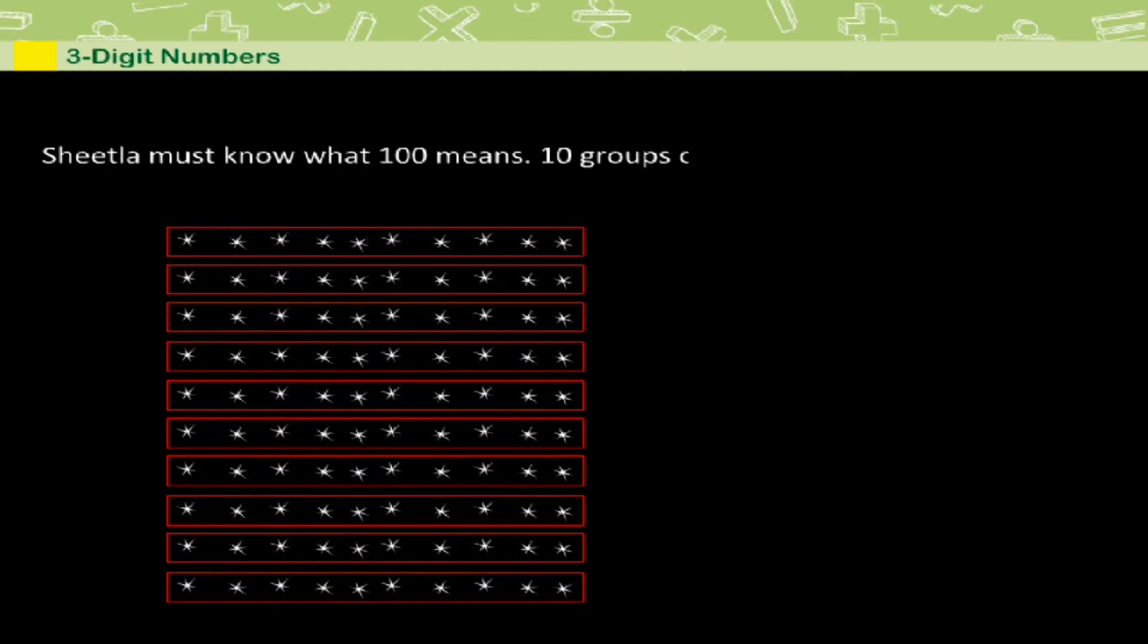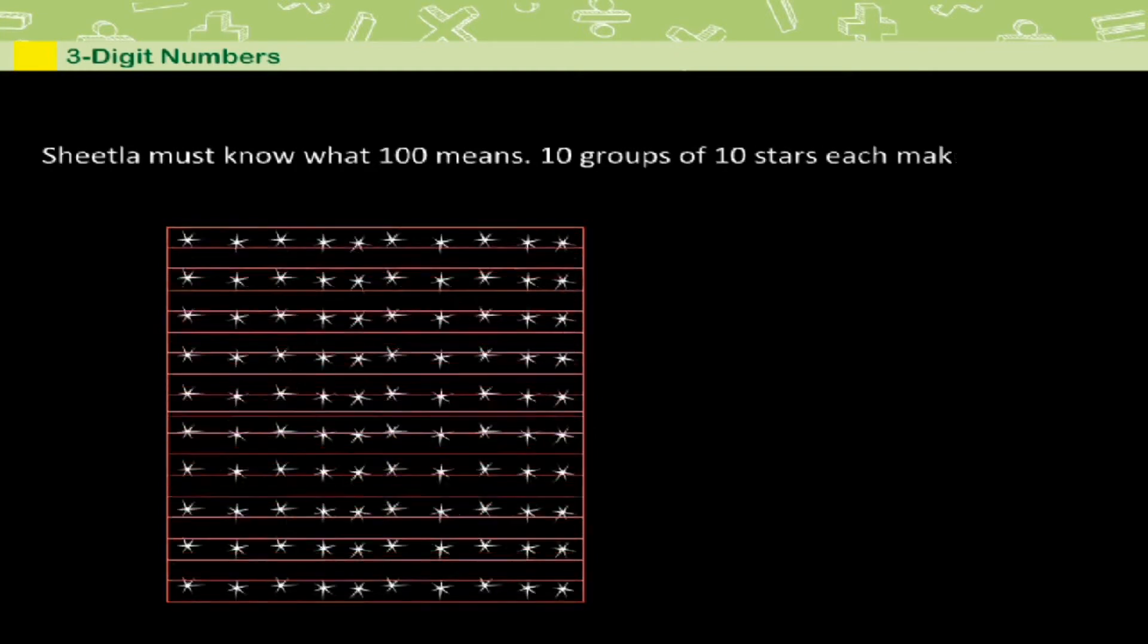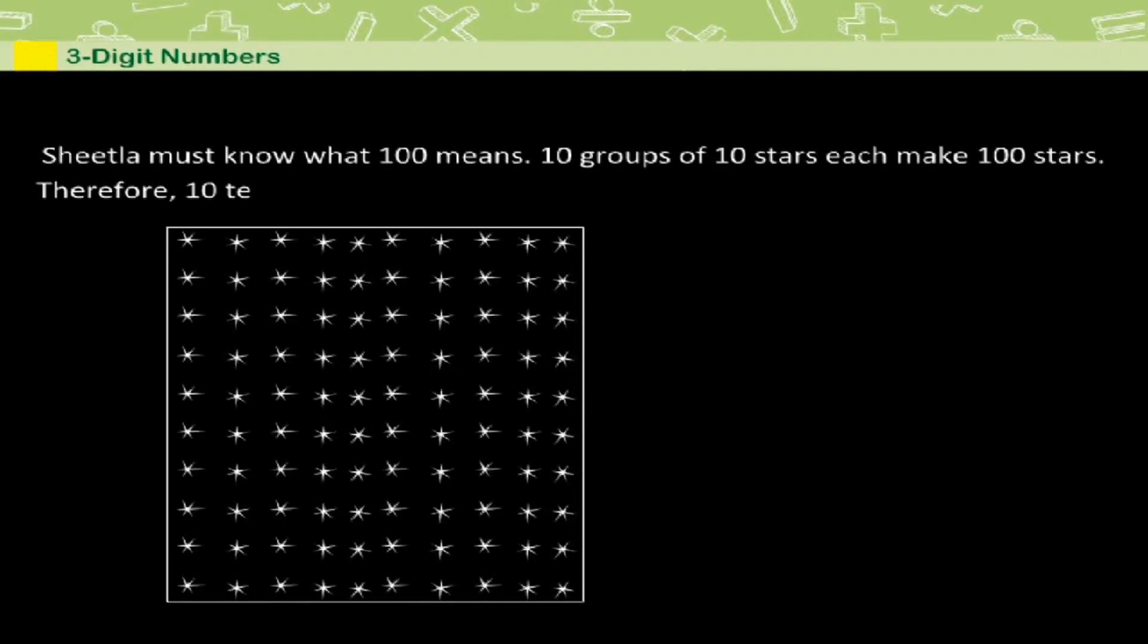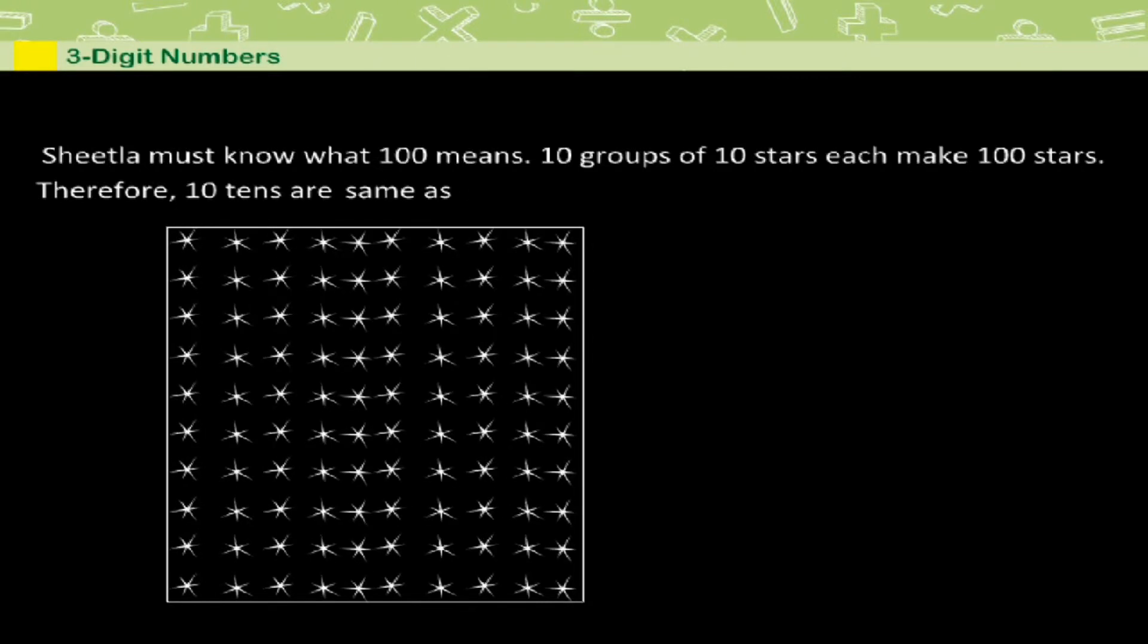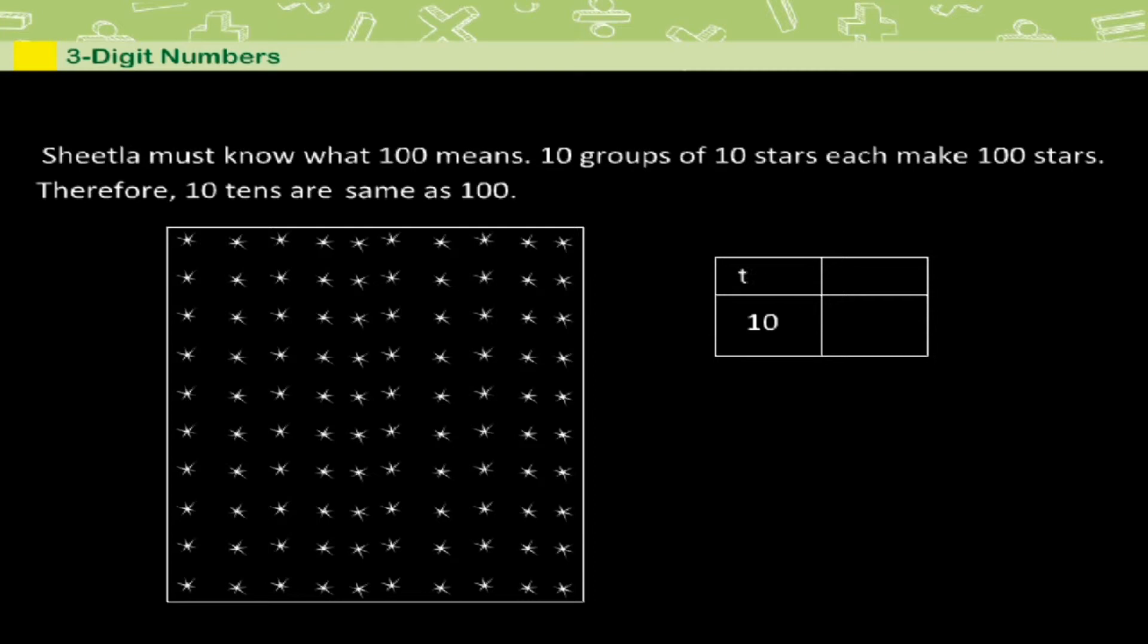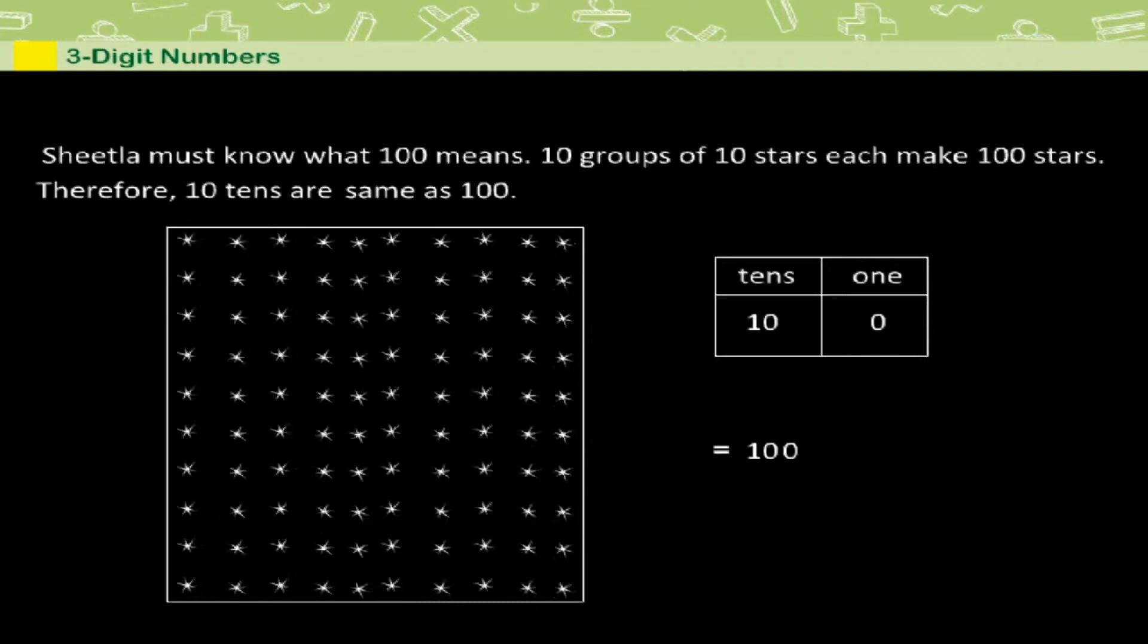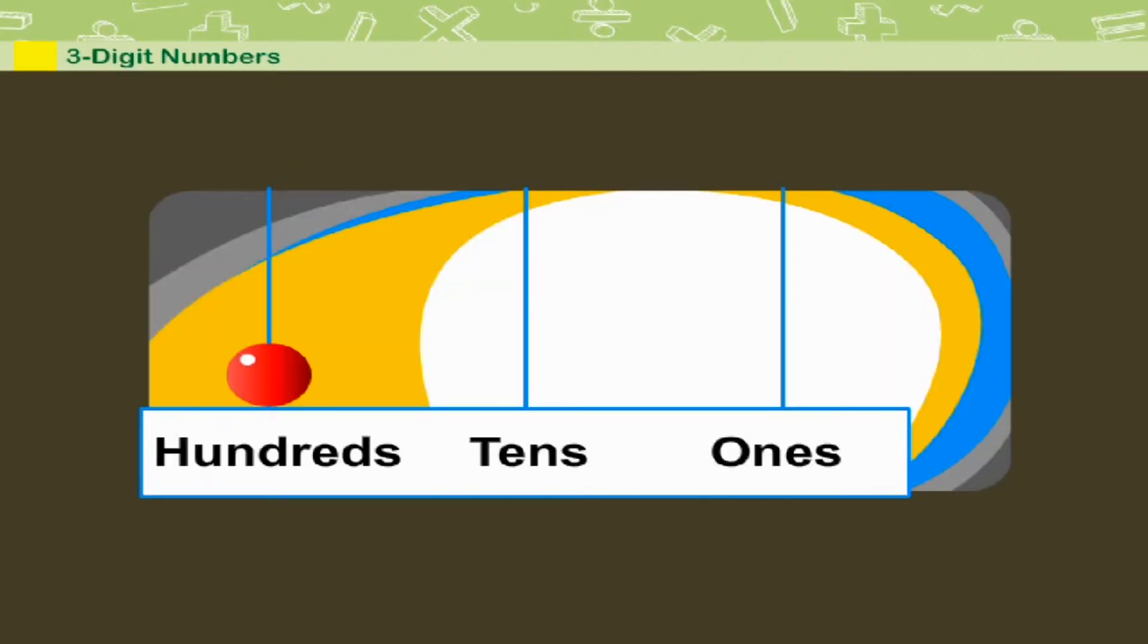Sheetla must know what hundred means. Ten groups of ten stars each make hundred stars. Therefore, ten tens are same as hundred. Ten tens and zero ones is equal to hundred. This can be shown on an abacus.